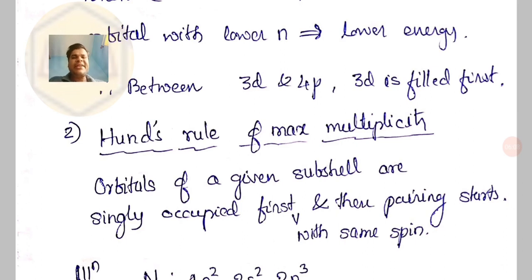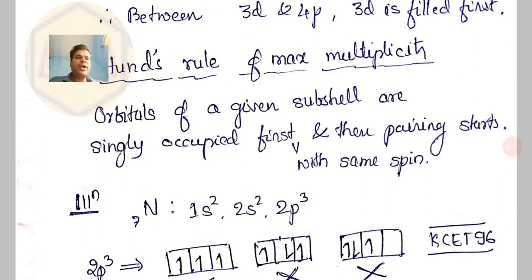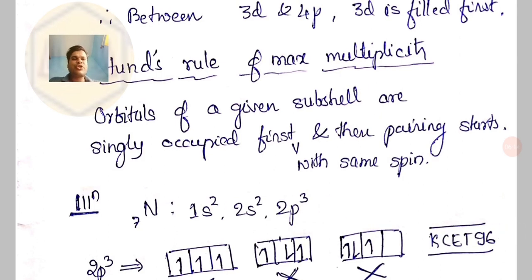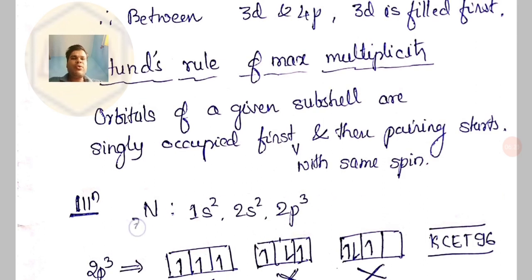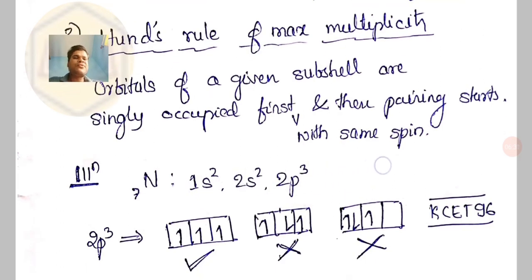Let's understand that with an illustration. Take nitrogen with atomic number 7. According to the Aufbau principle, the electronic configuration is 1s², 2s², 2p³ — 2 plus 2 plus 3 gives 7 electrons filled. Now the question arises: in the 2p subshell, there are three orbitals — px, py, pz — three different orbitals. How are the electrons occupied here?